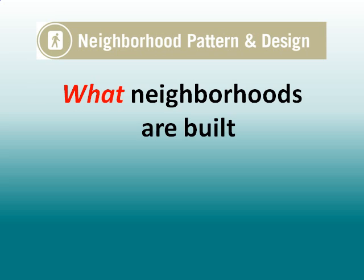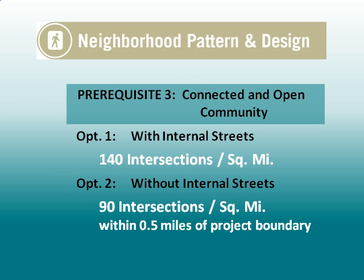The next place intersection density is addressed is in the Neighborhood Pattern and Design category. This category addresses project site design, so it looks at intersection density within the development itself. Prerequisite three, Connected and Open Community, requires projects with internal streets to have at least 140 intersections per square mile. For projects without internal streets, it requires the surrounding area to have 90 per square mile, the same as in the Smart Location and Linkage category prerequisite.